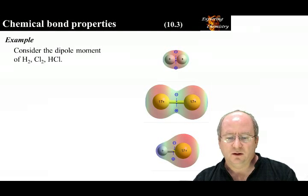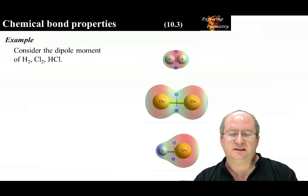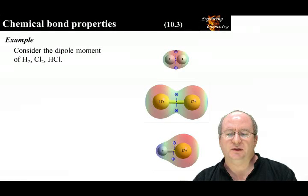In chlorine, both atoms are still the same but more electronegative. They still have the same electronegativity and attract the electrons the same. Again, the center of positive charge and center of negative charge are in the same location.